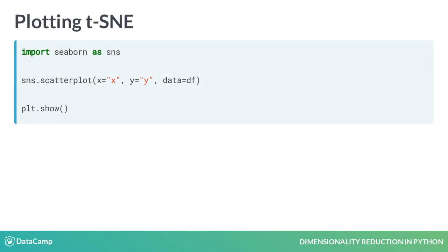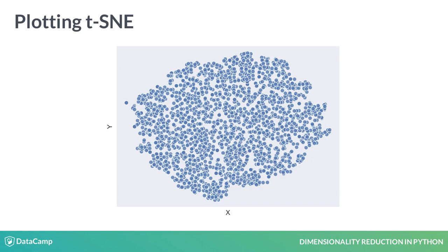We can now start plotting this data using Seaborn's scatterplot method on the X and Y columns we just added. The resulting plot shows one big cluster, and in a sense, this could have been expected. There are no distinct groups of female body shapes with little in between. Instead, there is a more continuous distribution of body shapes, and thus one big cluster.